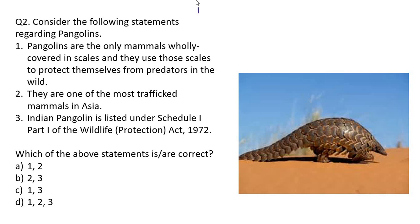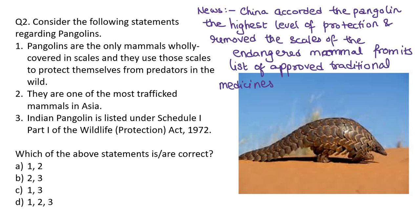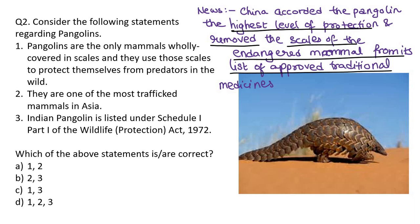This was in news. Why? Because China accorded the pangolin the highest level of protection and removed the scales of this endangered mammal from its list of approved traditional medicines. Why? Because there were links between wild meat and transmission of the SARS-CoV-2 virus. That is why they removed pangolin scales from approved traditional medicines and gave the animal the highest level of protection.